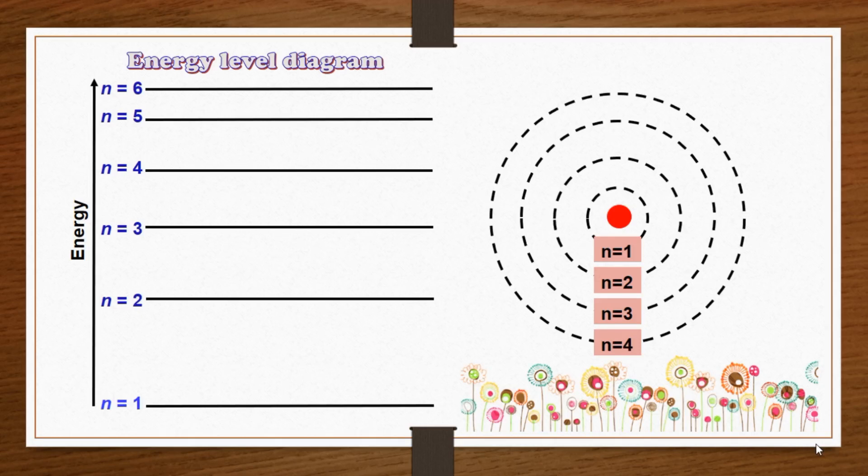According to the second Bohr postulate, the energy of an electron is quantized, which means an electron moving in an orbit can have only a certain amount of energy. The energy of the electron in its level can be calculated by using the following equation.